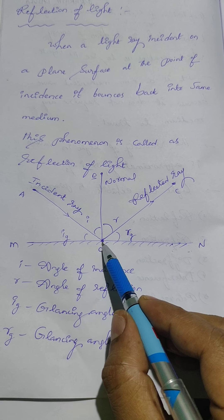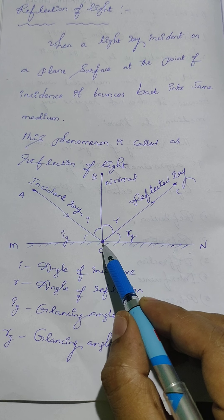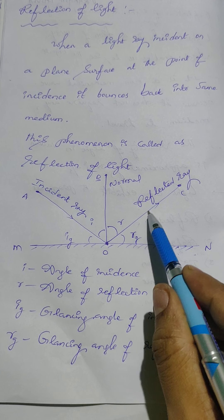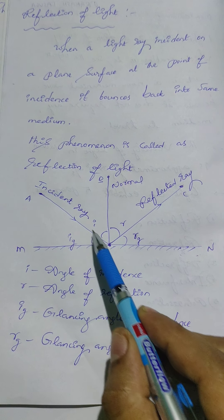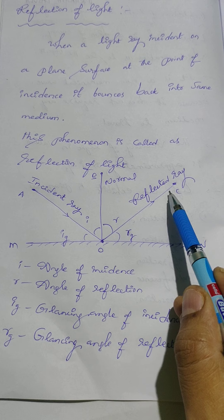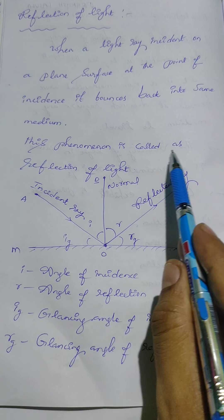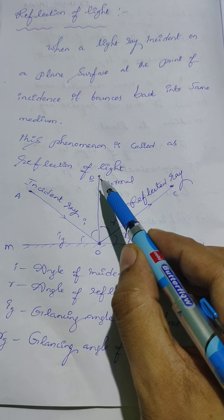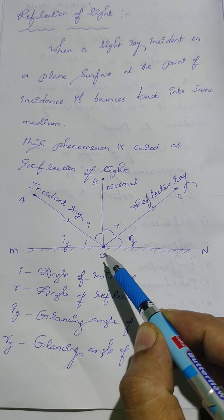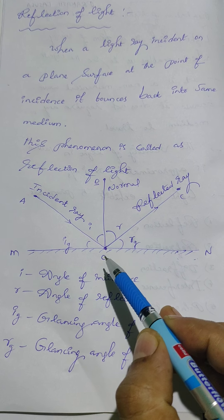Where is point of incident? Here, this is the point of incidence. At this point the light ray bounces back into same medium, so comes here in this medium. This phenomena is called as reflection of light.